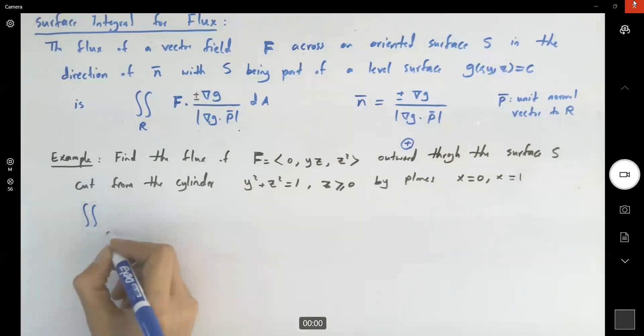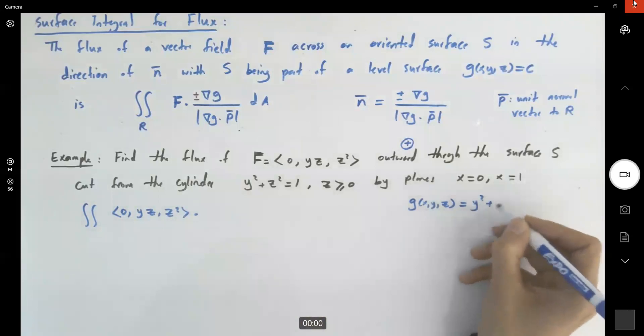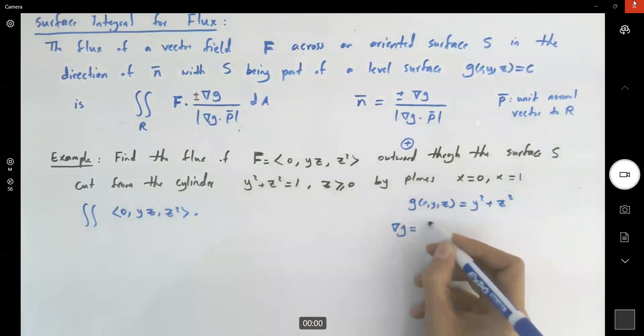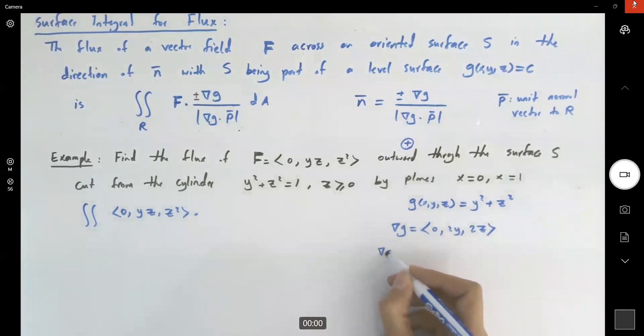We have the double integral of F, which is (0, yz, z²) dot gradient of g. For the gradient of g, g(x, y, z) is defined as y² + z². So the gradient of g is (0, 2y, 2z).